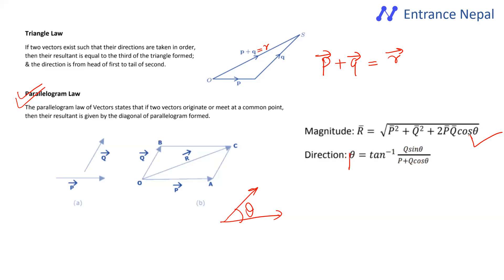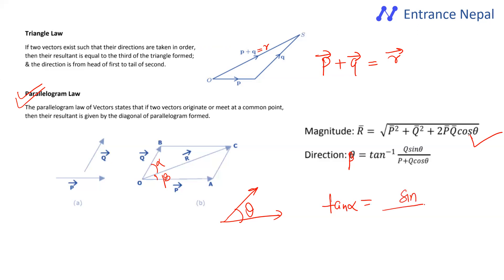The beta angle is the angle the resultant OP vector makes. To find the angle, we use tan inverse. If Q is a single vector, the angle formula applies. The direction of the resultant is determined by the angle using tan inverse of the appropriate components.